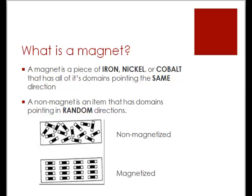Domains just mean an area of a magnet that is uniform in its magnetization. Below I included a picture of a non-magnetized object — it would have the domains jumbled and random. Down here they're all arranged nicely in lines, which would be a magnetized object.